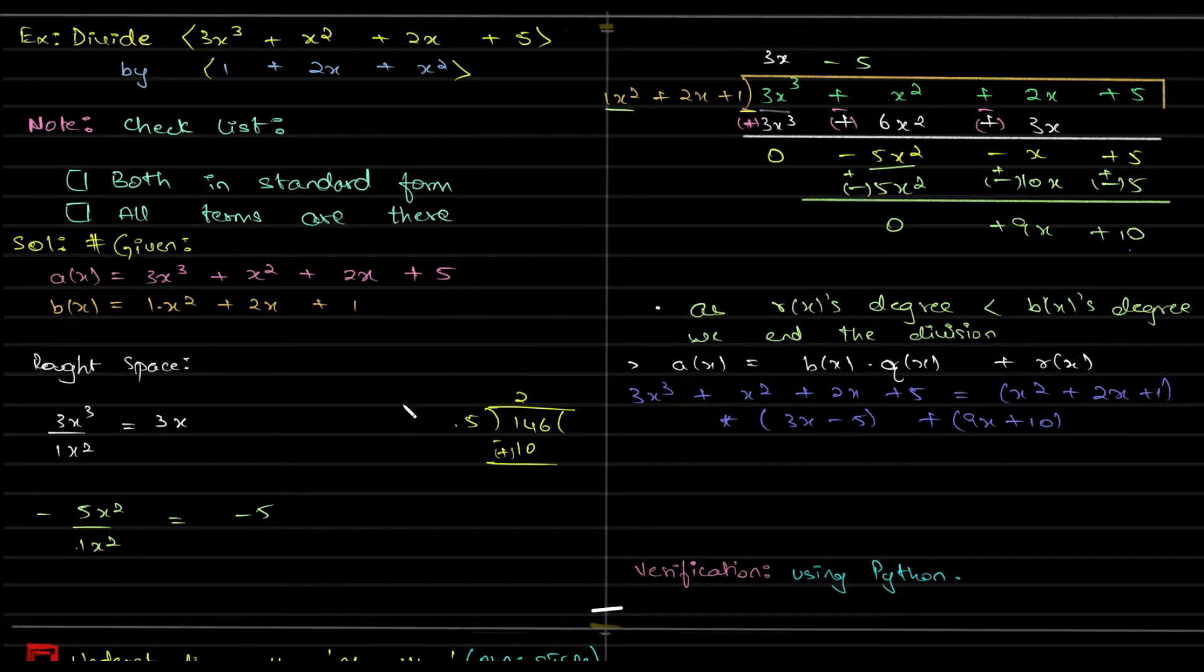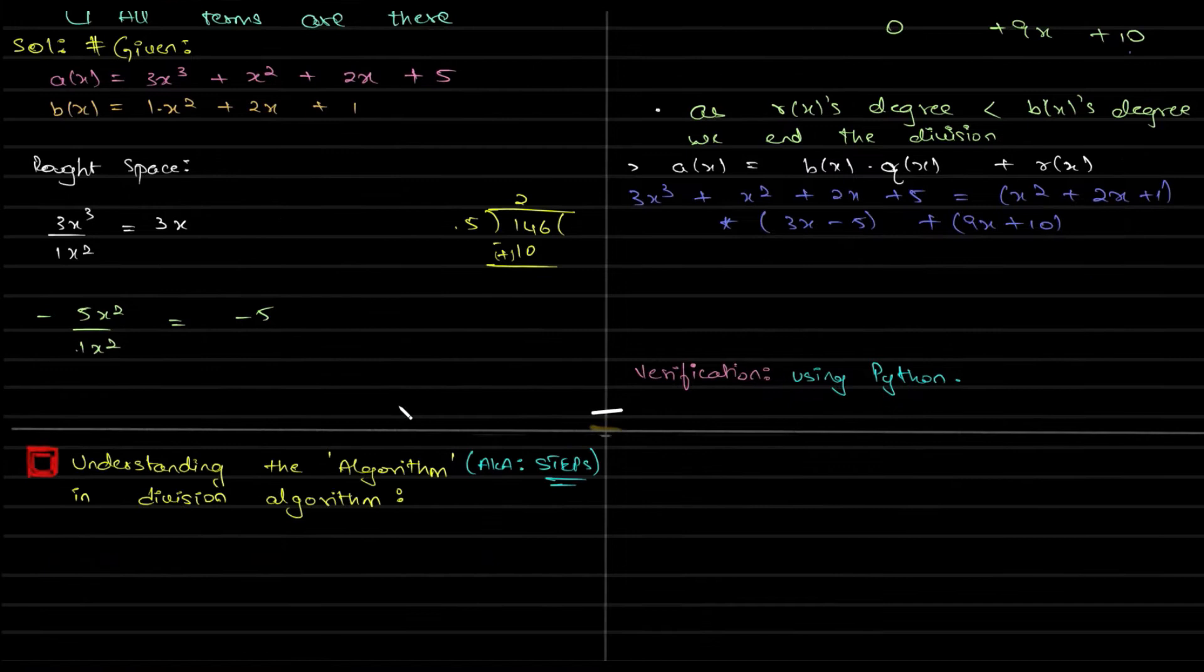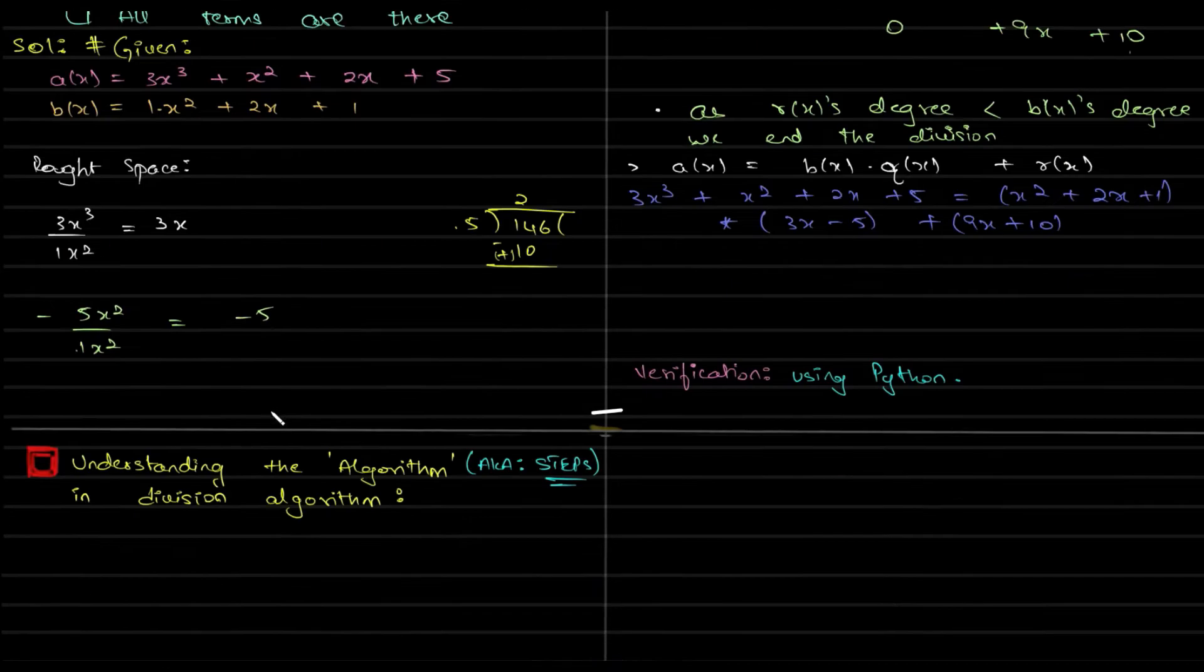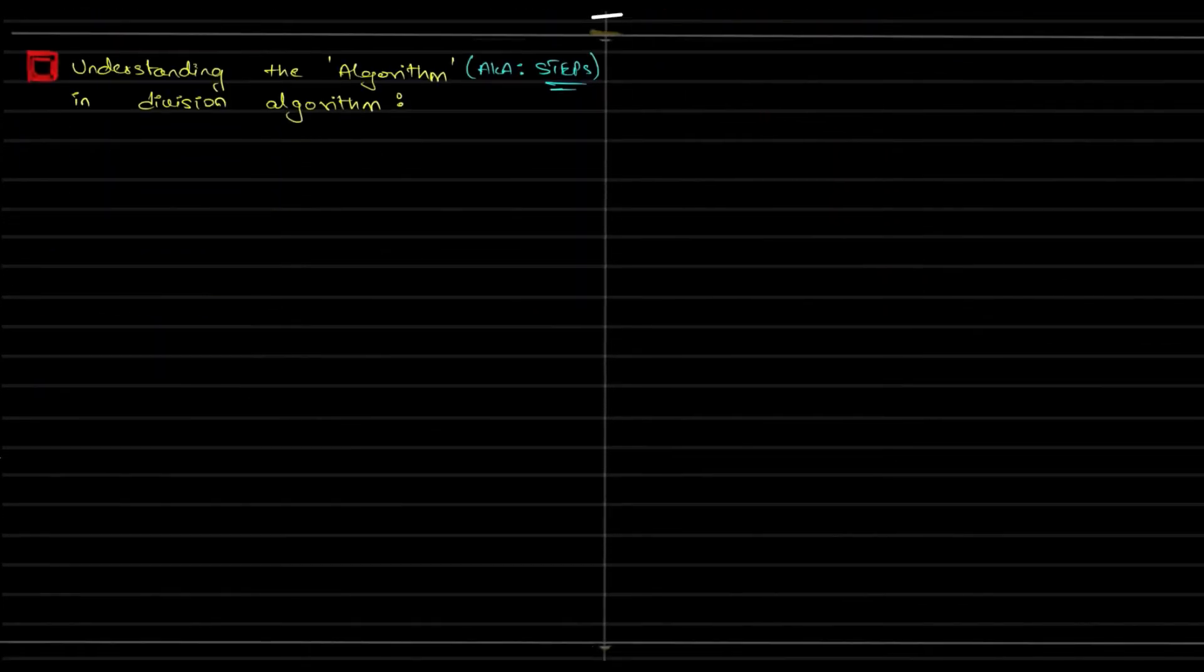What we will do now is we will look into the code which gives us the right answer whatever numbers I give it, whatever polynomials I have, the divisor and the dividend. If I type in the right numbers, right coefficients, I am getting the right answer.